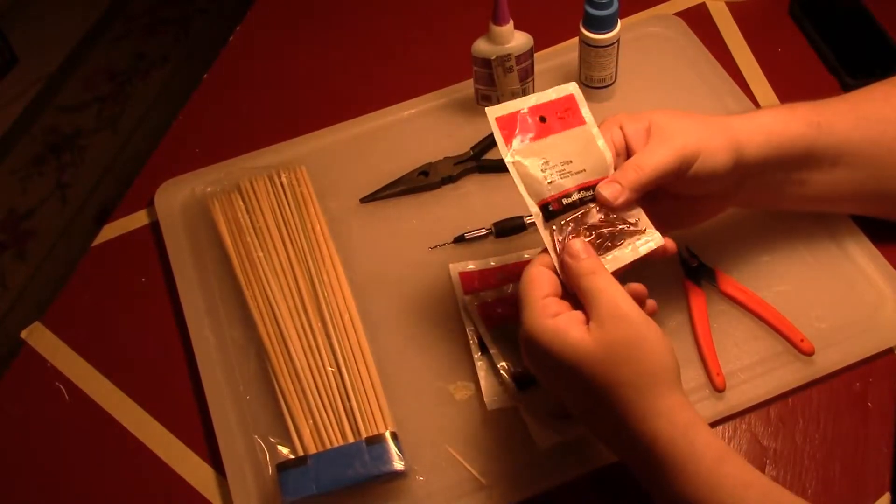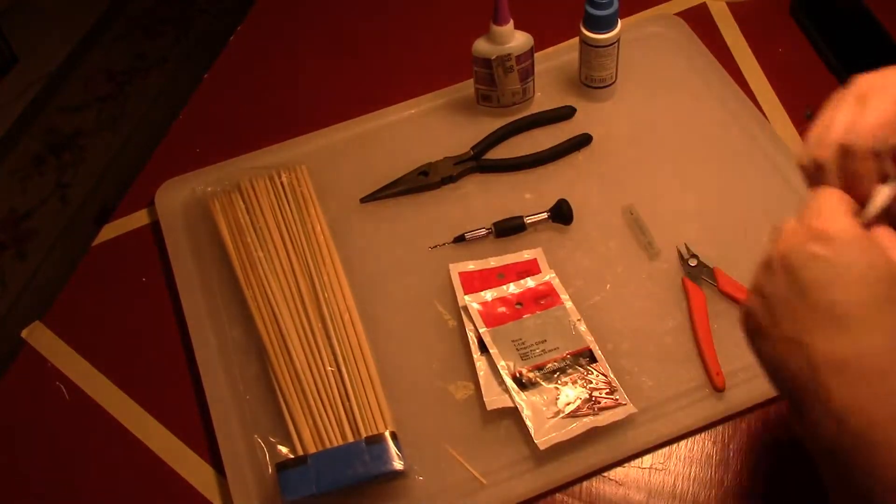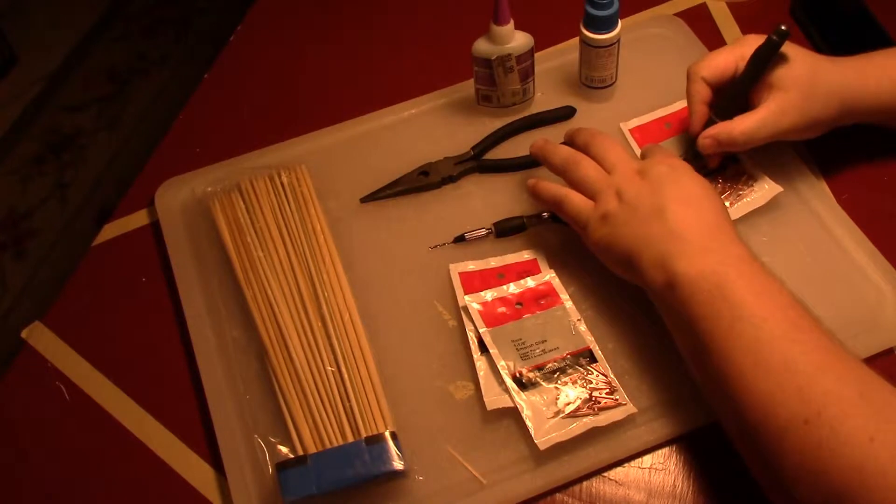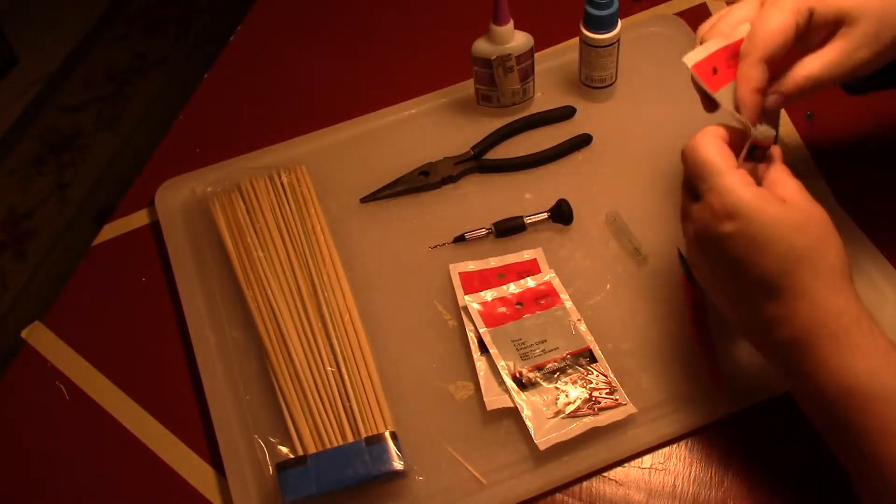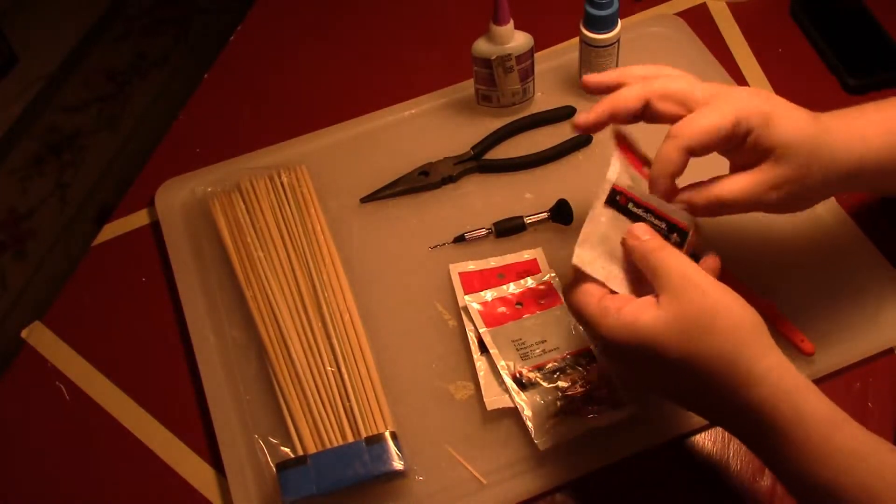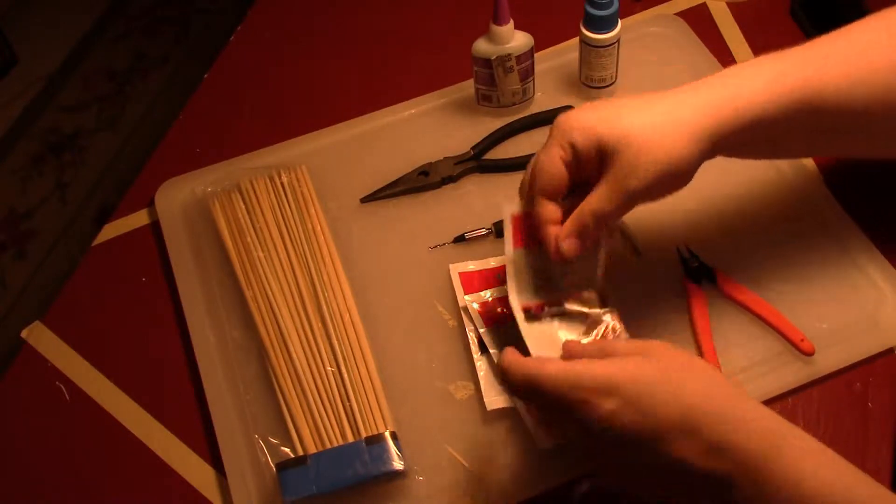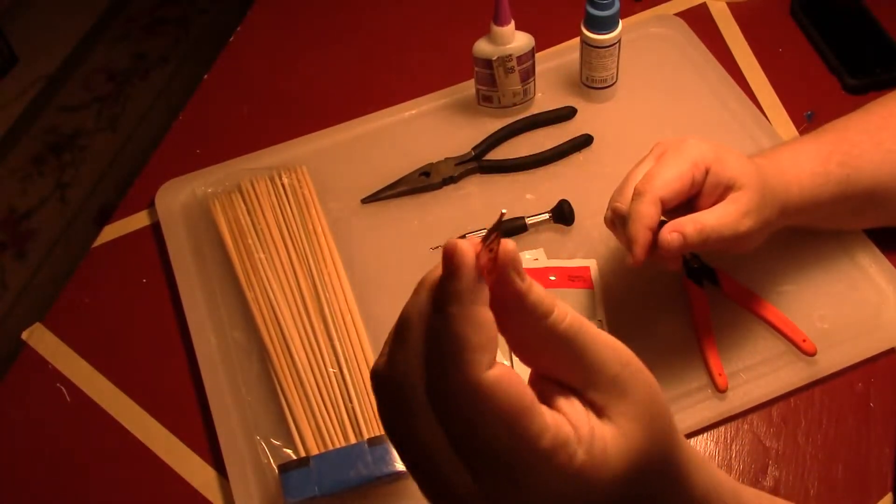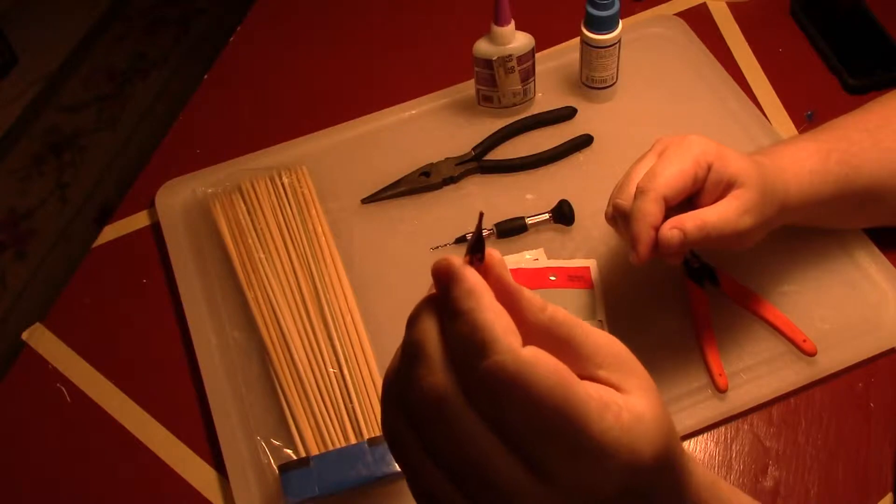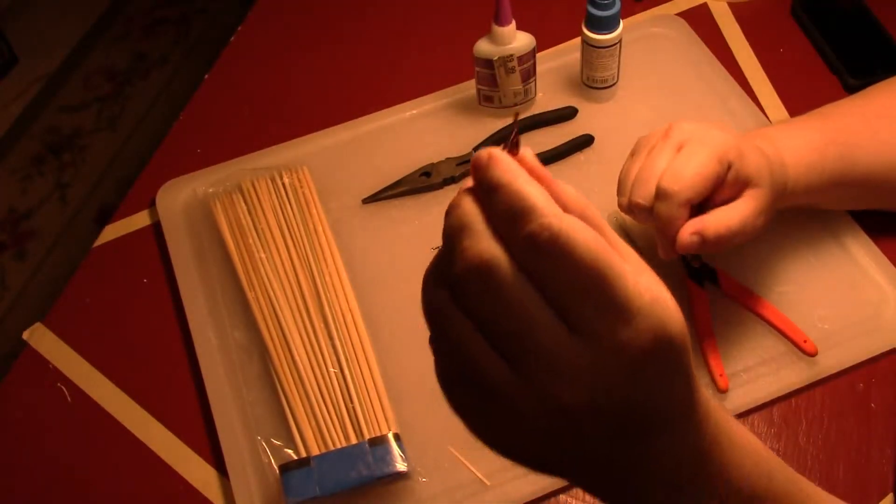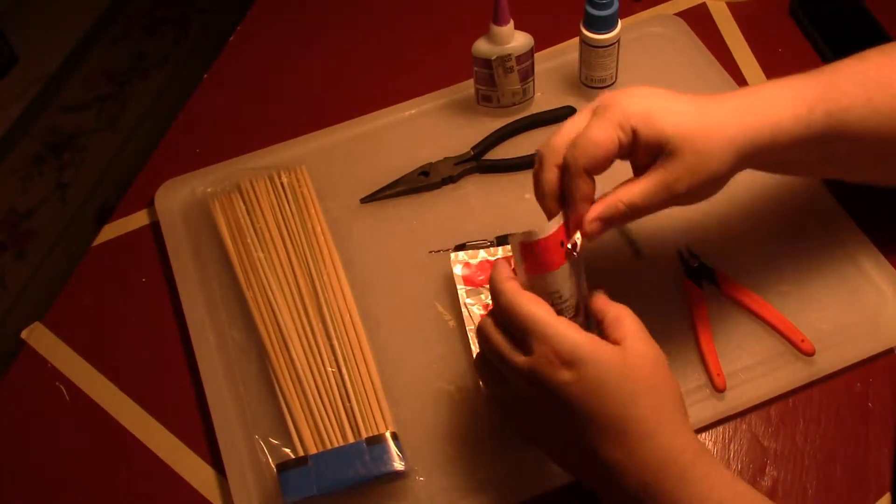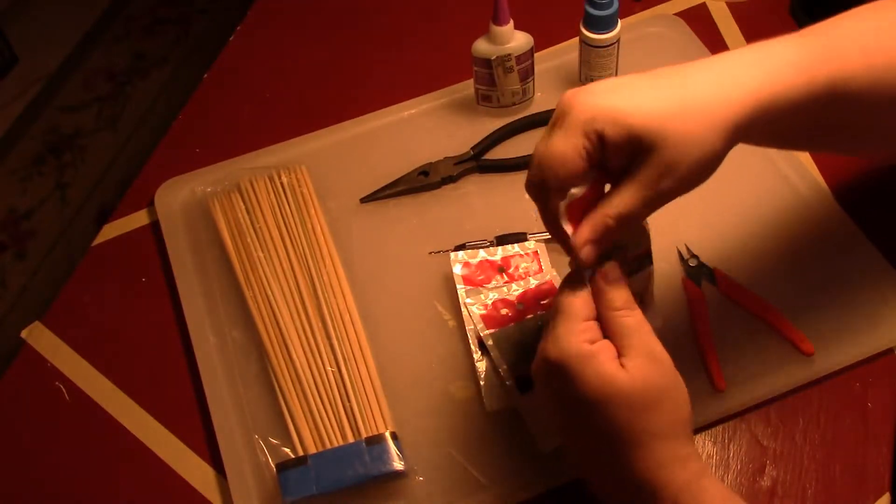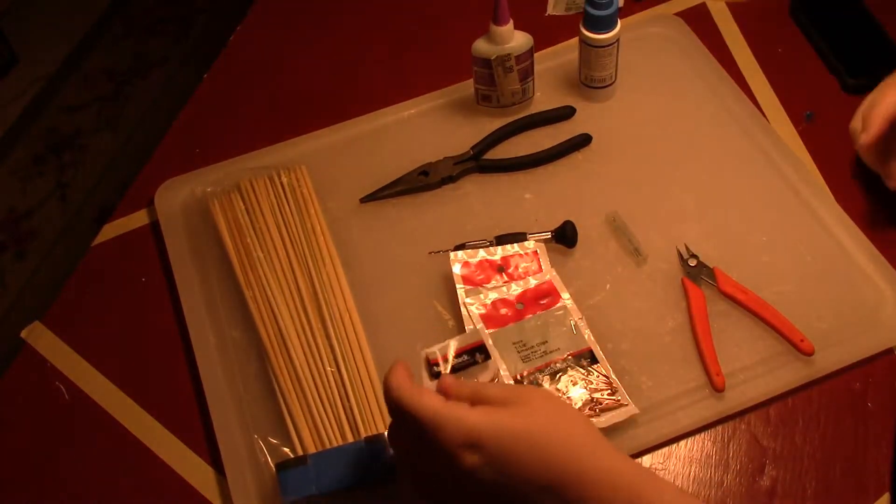Next thing I need are a series of these little brass lamps. I got these at Radio Shack. They're about $3 for a package of 10. Whatever kind you get, make sure that they are the type that don't have teeth in the jaws, because serrated teeth will damage your model parts and can cause you more work in the long run.